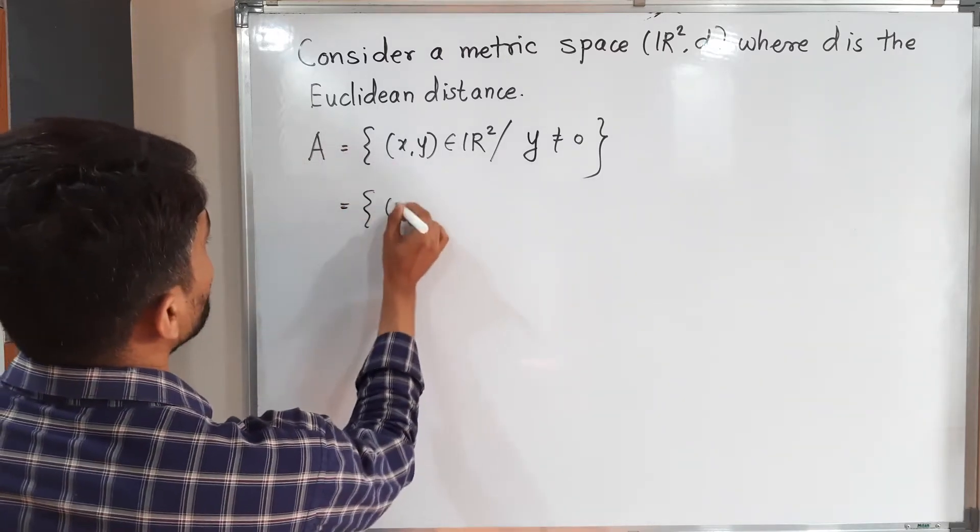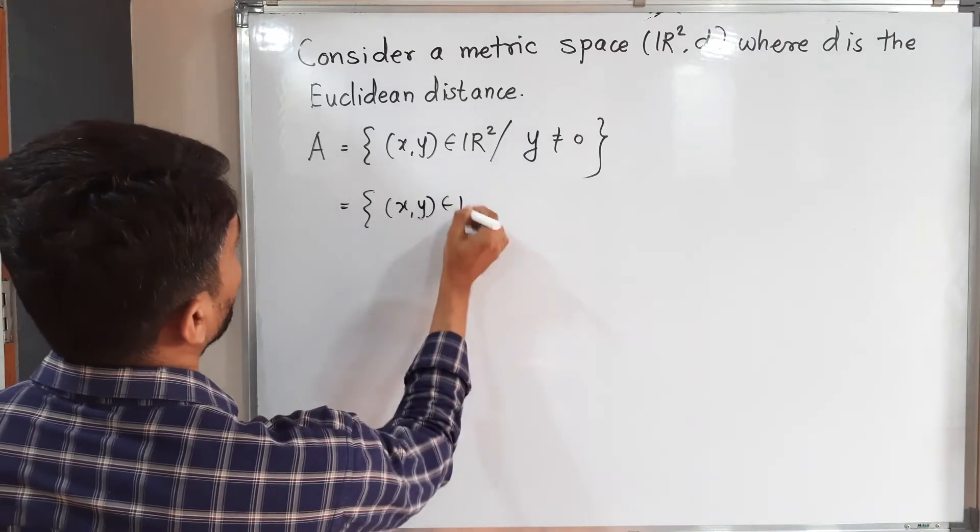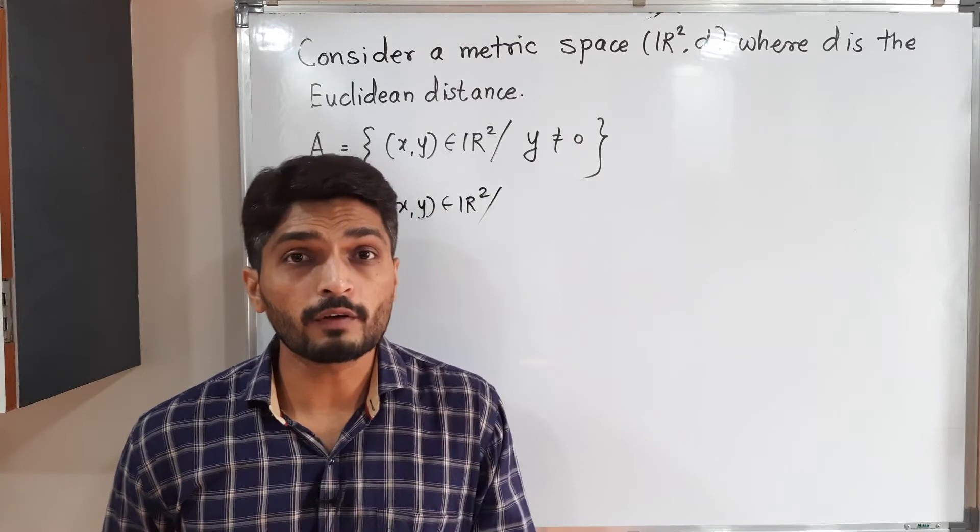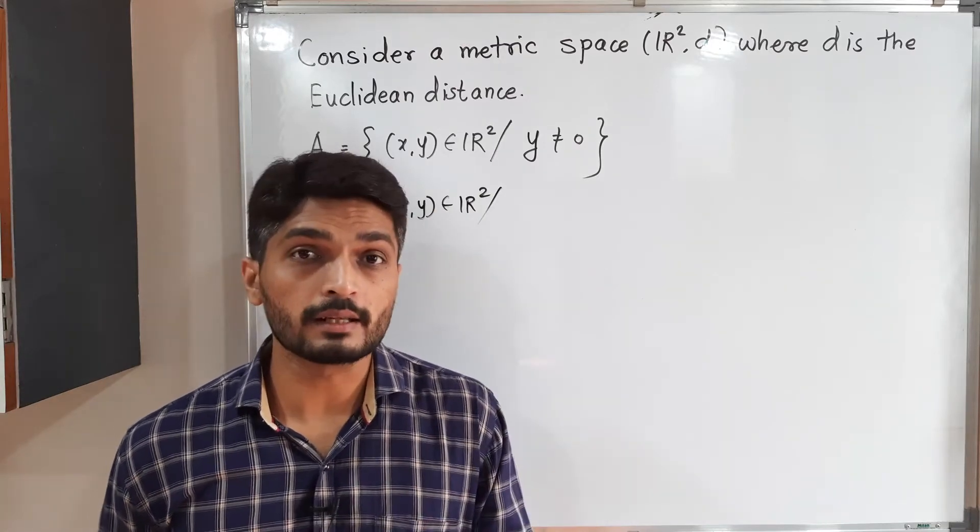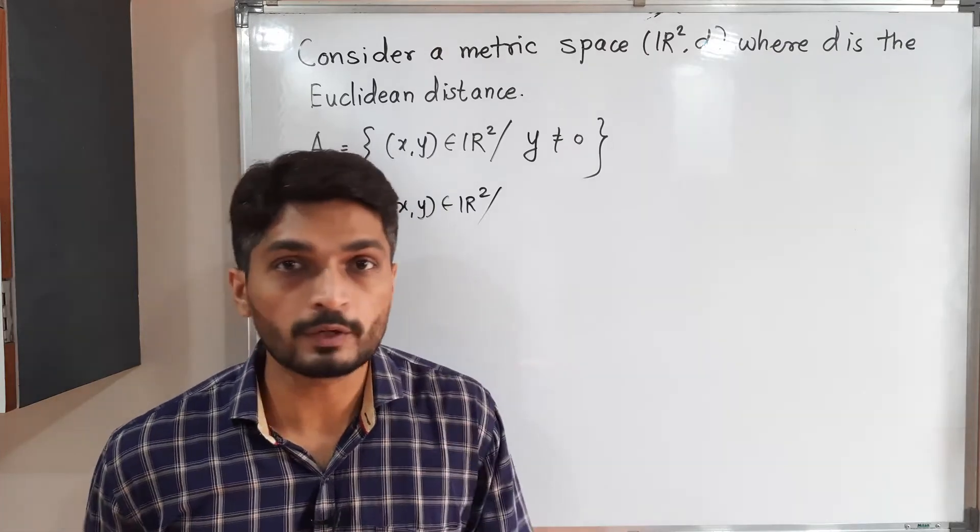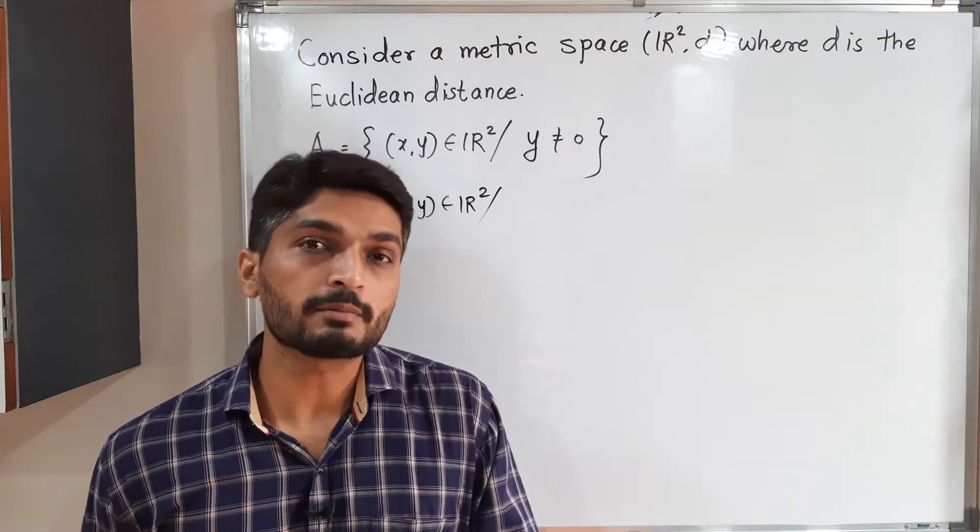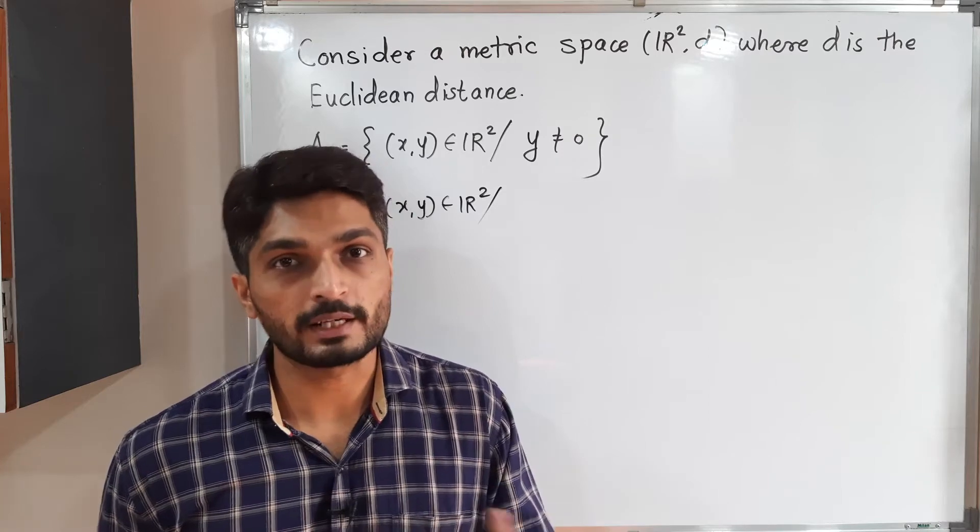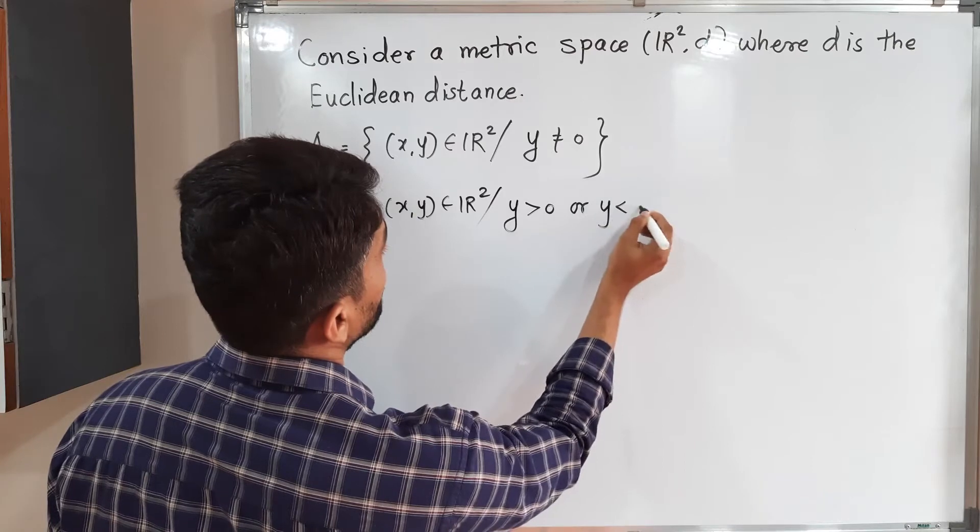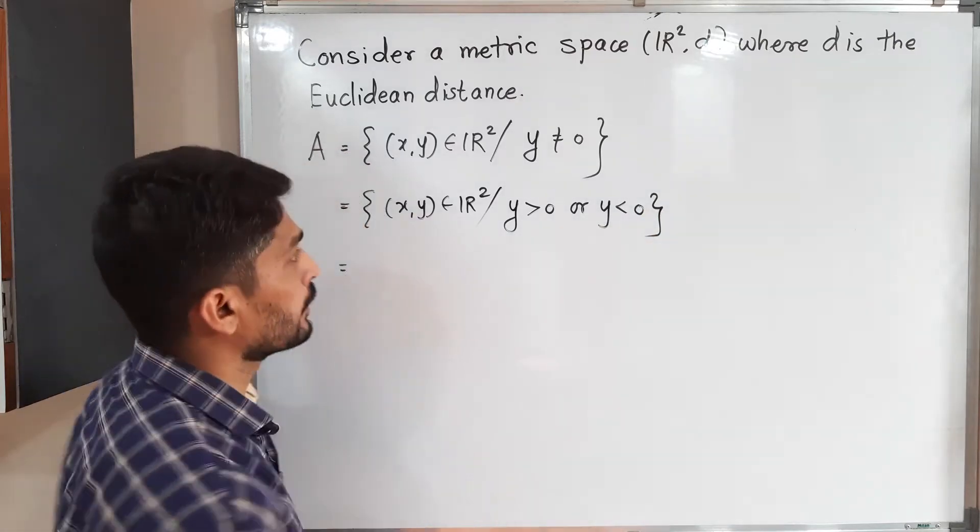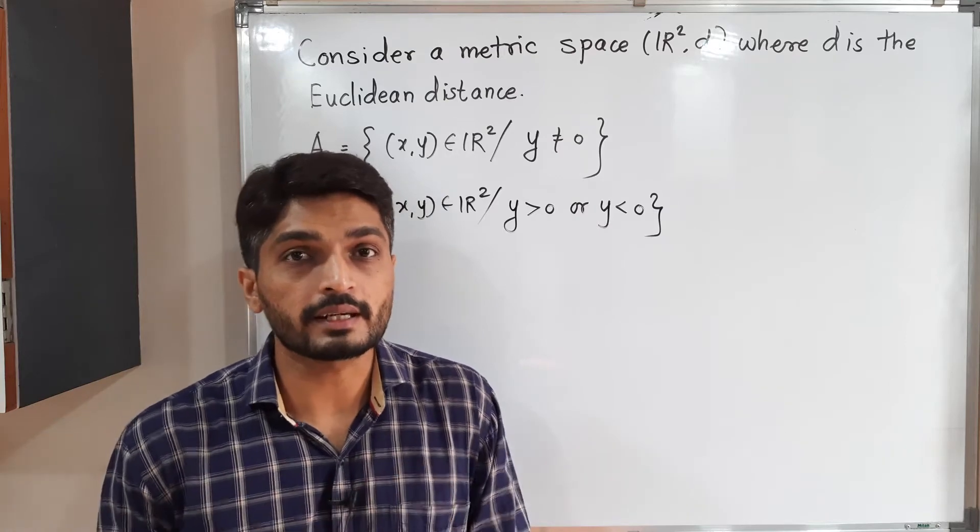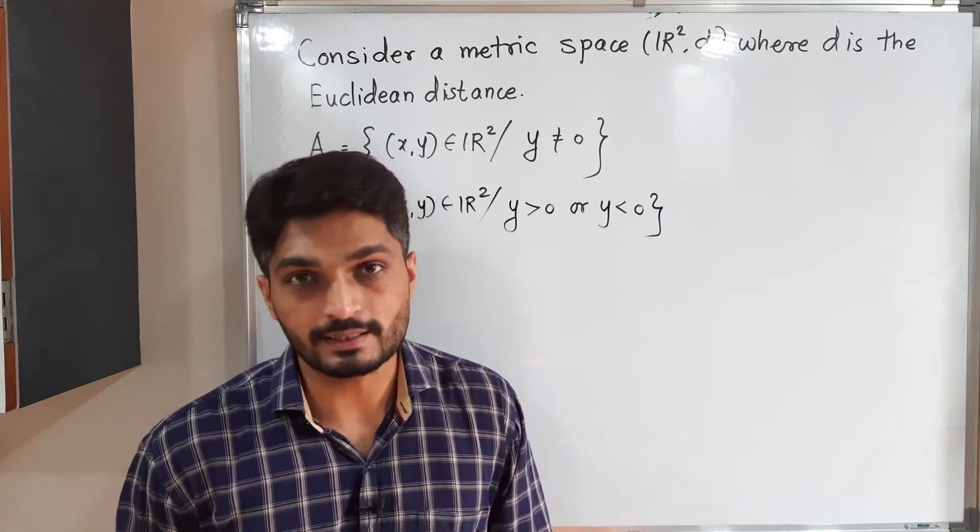This is equal to {(x,y) ∈ R² : y ≠ 0}. The law of trichotomy says any real number is either positive, negative, or zero. Since y is not equal to 0, that means either y is positive or y is negative. Let us write y > 0 or y < 0. You know that 'or' means union and 'and' means intersection, so this set can be expressed as a union of two distinct sets.